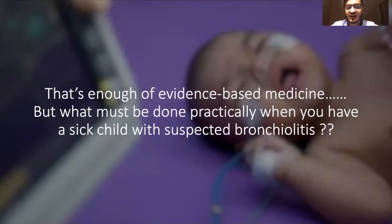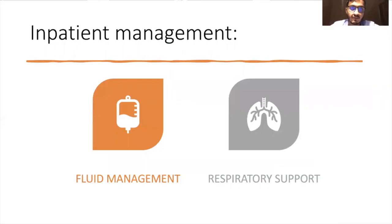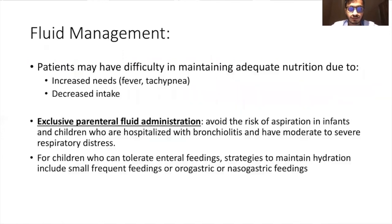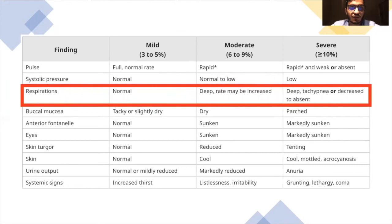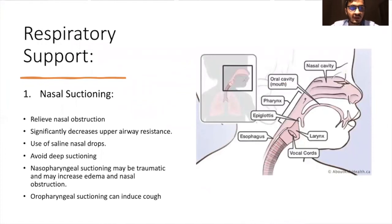Now, what exactly has to be done practically when a sick child with suspected bronchiolitis comes to your OPD? Inpatient management involves mainly fluid management and respiratory support. Fluid management is mainly exclusive parenteral fluid administration to avoid the risk of aspiration in infants with moderate to severe respiratory distress. For children who can tolerate enteral feeding, strategies like small frequent feedings or orogastric and nasogastric feeding should be implemented. Based on respiratory efforts, you can determine whether the child is mildly, moderately, or severely dehydrated and correct accordingly.